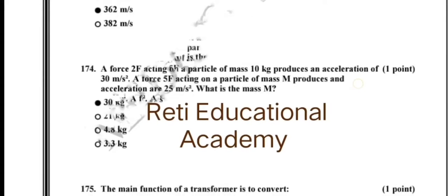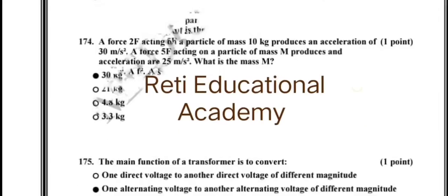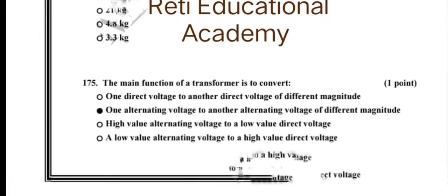Question number 174: a force 2F acting on a particular mass of 10 kg produces an acceleration of 30 meters per second squared; a force 5F acting on a particle of mass m produces an acceleration of 25 meters per second squared; what is the mass m? The correct option is 30 kg. Question number 175: the main function of a transformer is to convert one alternating voltage to another alternating voltage of different magnitude.